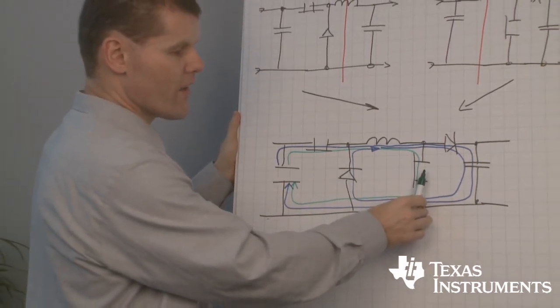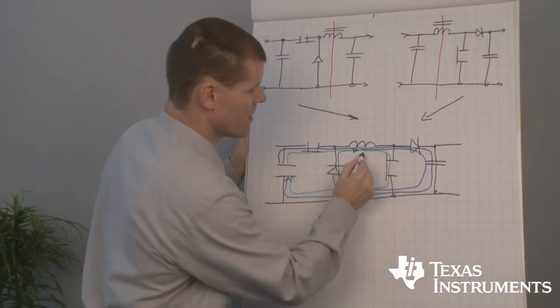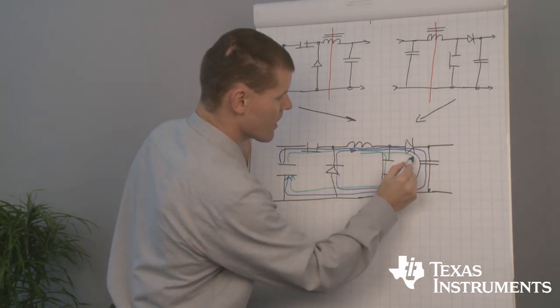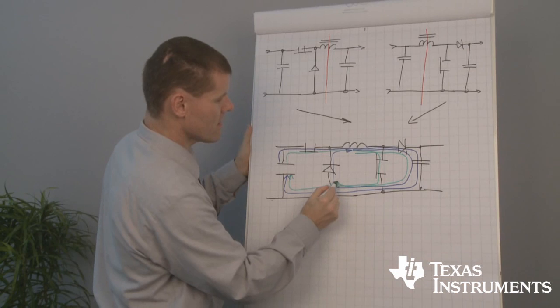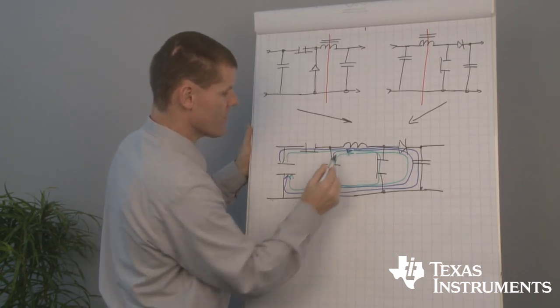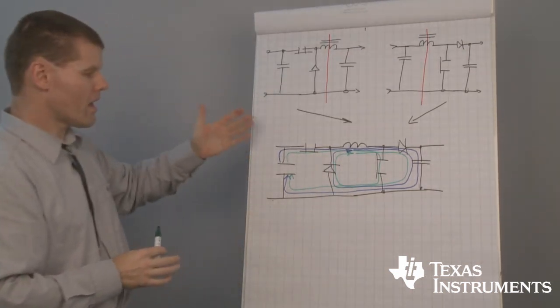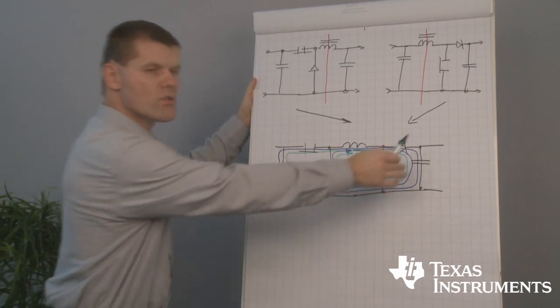When the low side FET opens, the current across the inductor and across the freewheeling diode is forced to the output.